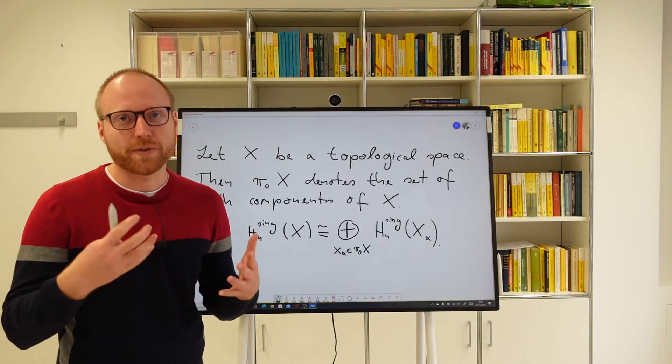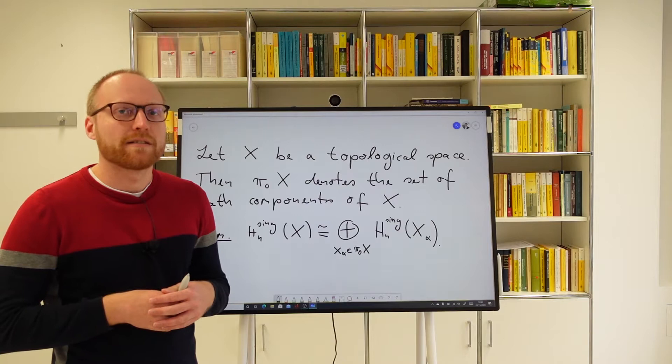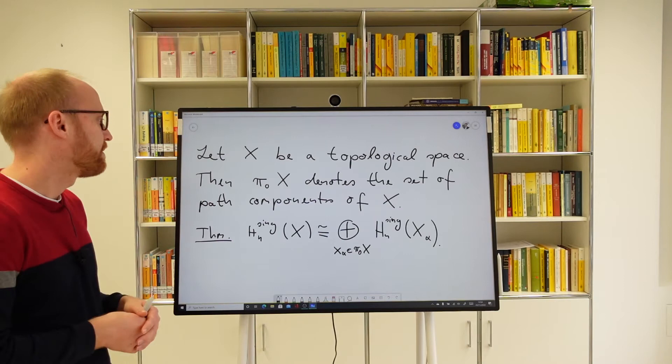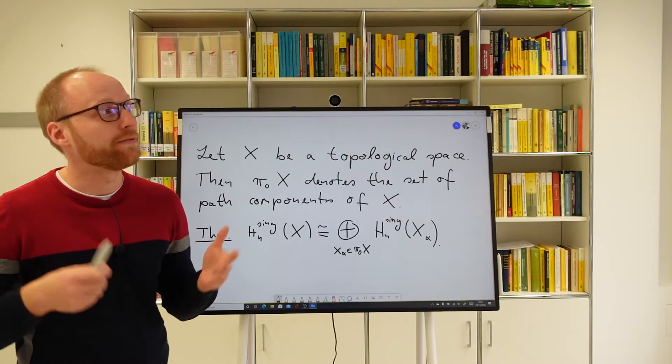We discussed this in a previous video — I showed it for a topological sum of two spaces. In this case, the space is the topological sum of the path components, and then you do it inductively for finitely many path components. The difference here is that I didn't require any further condition on this set of path components — it may be of any cardinality: finite, countable, even uncountable, doesn't matter.